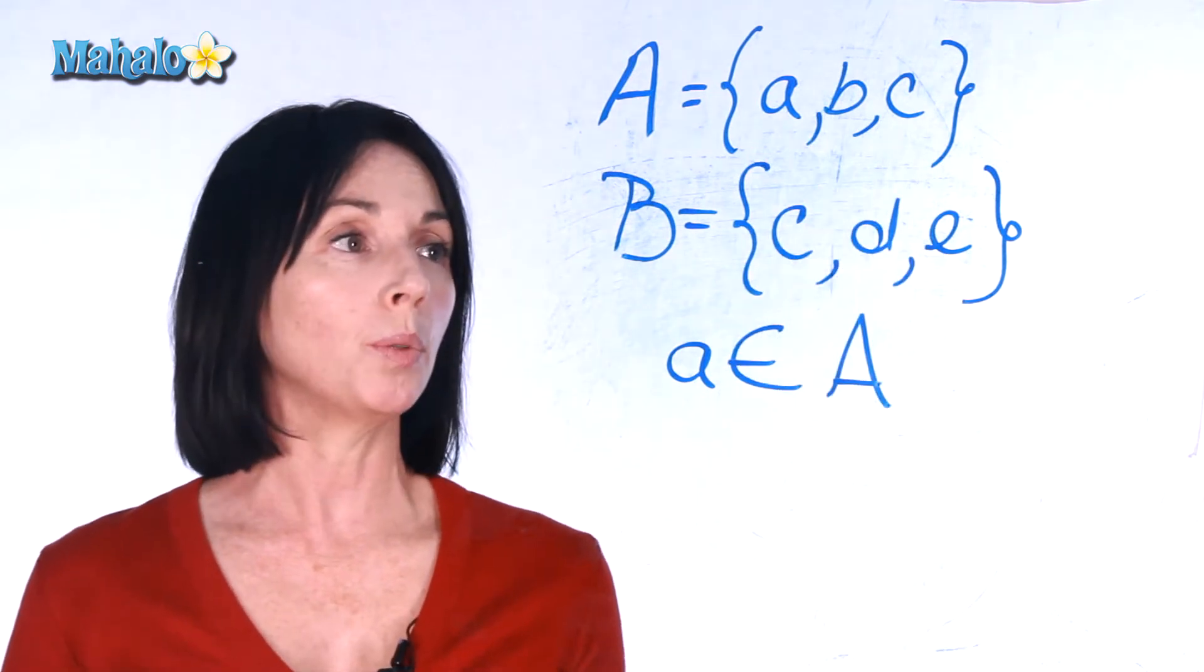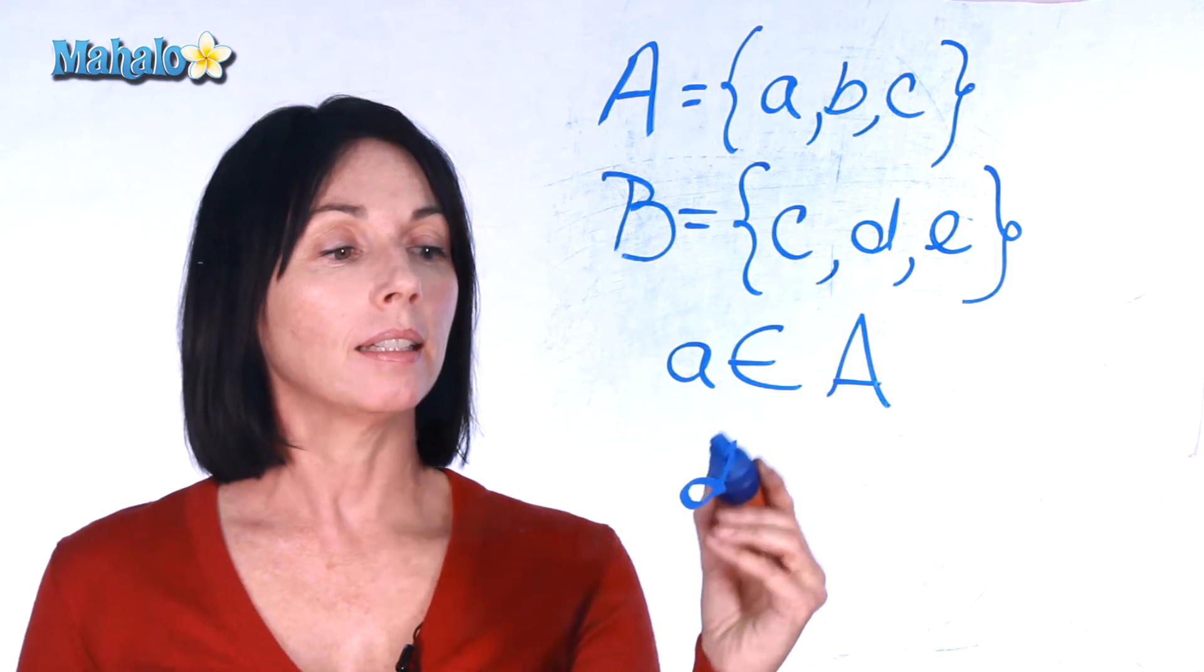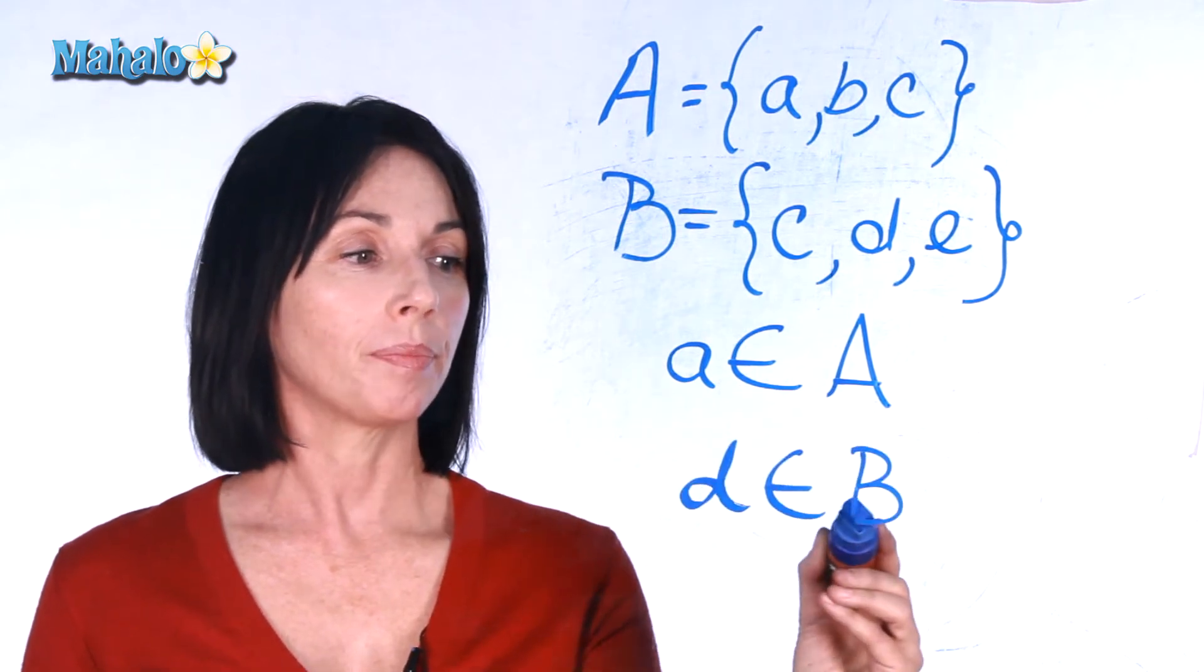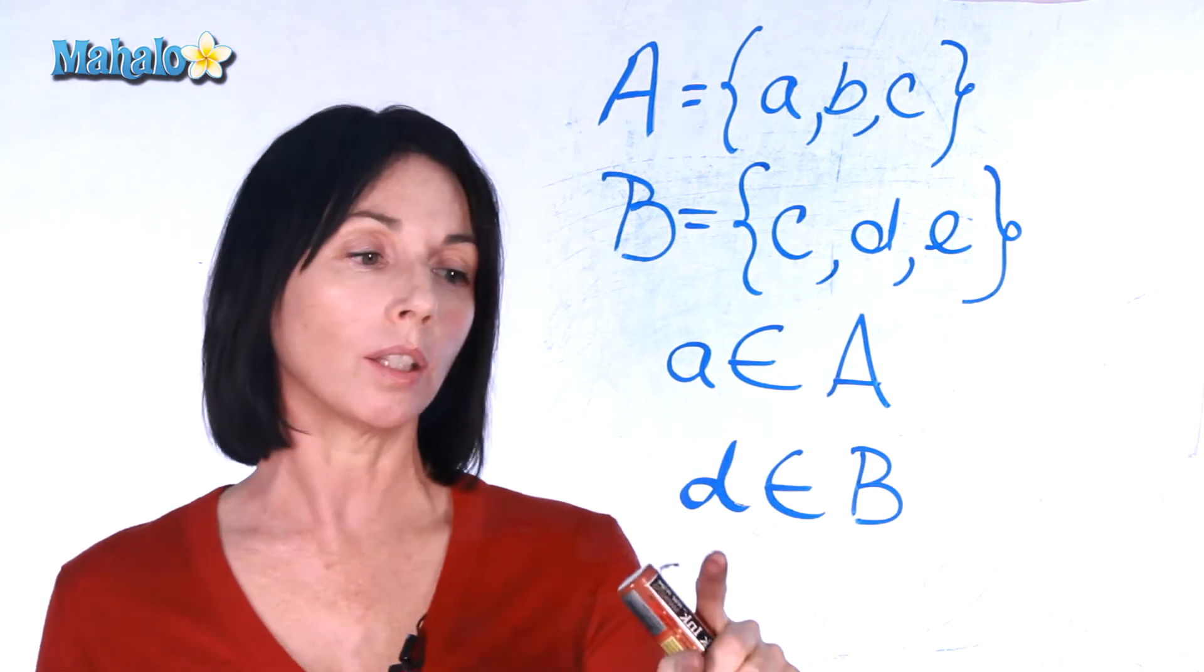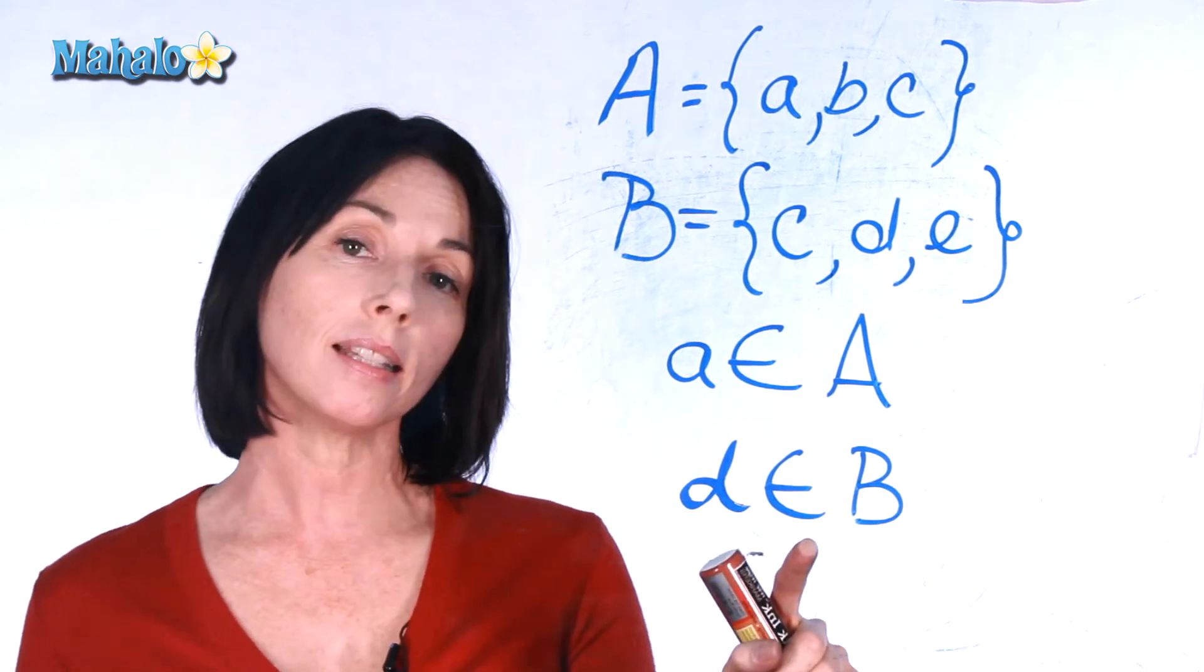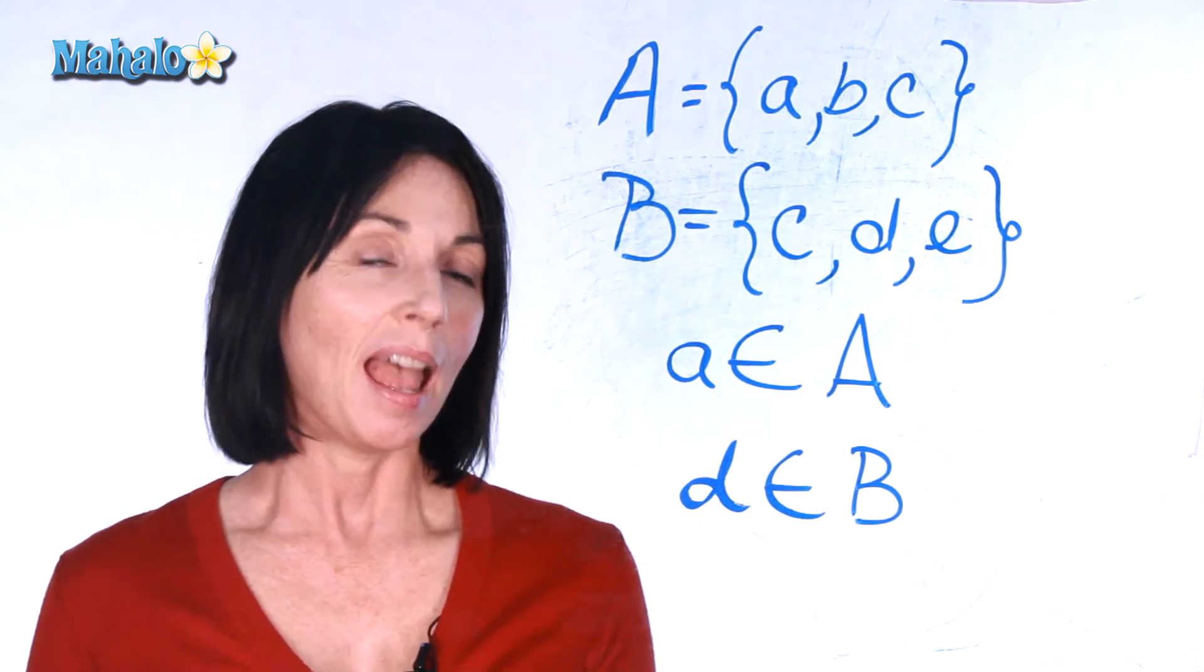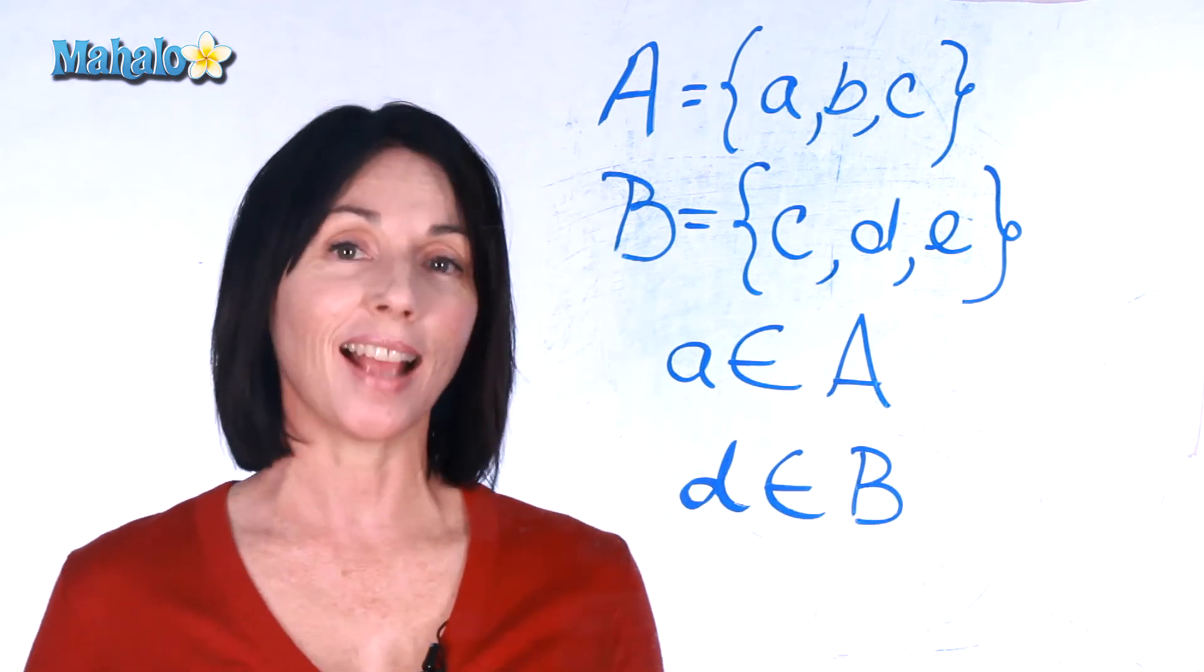So another example would be that d is an element of set B. Basically all this says is that the lowercase letter d exists in the set B. And that's a basic example of how you write sets.